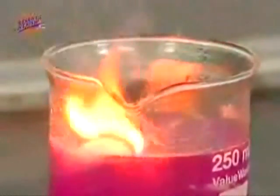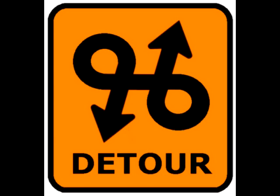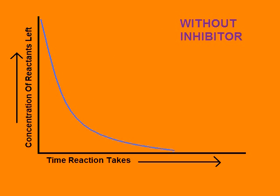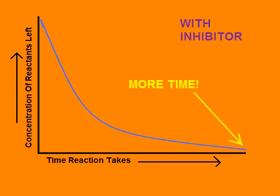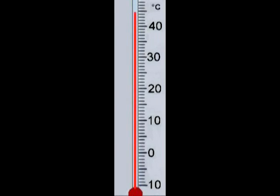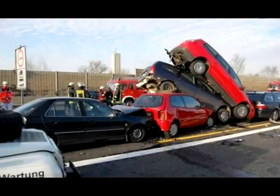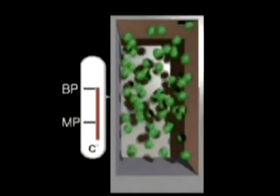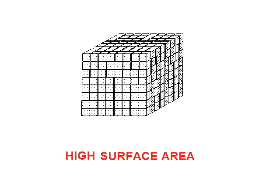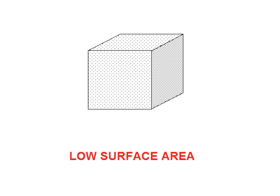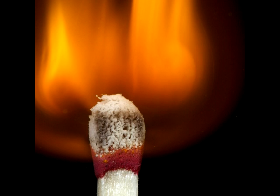Some reactions happen way too fast, they can end in an explosive blast. To slow it down you can add some steps, use an inhibitor then rate is less. Lower concentration or the temperature, fewer collisions over time occur. Lower pressure if you have a gas, less surface area for solid mass. It's RATE, RATE of reaction.